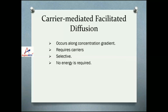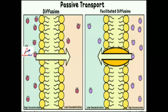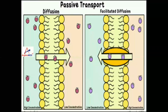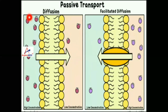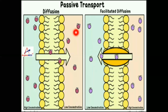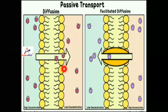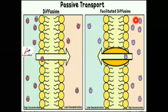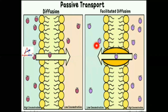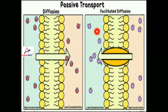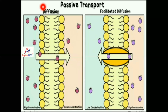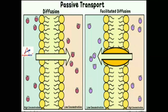The next form of transport is carrier-mediated or facilitated diffusion. It occurs along the concentration gradient, requires carriers, is selective, and uses no energy. In passive diffusion, concentration is higher on one side and lipid-soluble molecules pass through to the area of lesser concentration. In facilitated diffusion, molecules also pass from higher to lower concentration, but a carrier molecule is present to facilitate the transport. Both are types of passive diffusion.